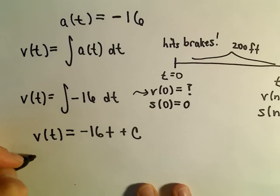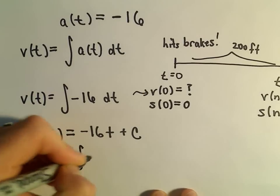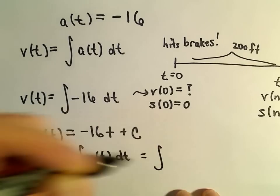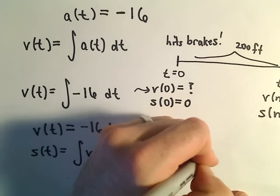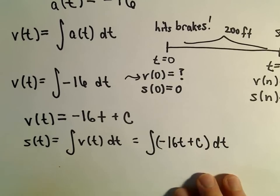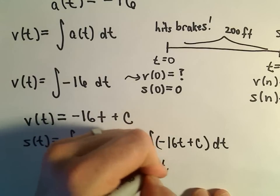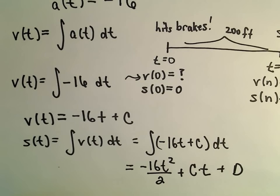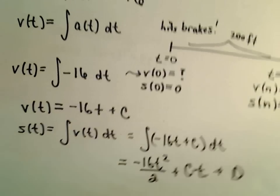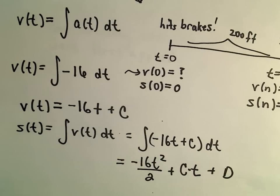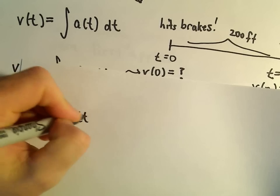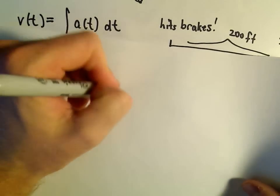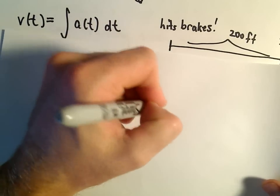I'm going to do one more anti-derivative. Our position function is going to be the anti-derivative of our velocity function, so we calculate the anti-derivative of negative 16t plus c, integrating with respect to t. The anti-derivative gives us negative 16t squared over 2 plus c times t, and then we tack on another arbitrary constant — let's call it d. Simplifying negative 16 over 2 gives us negative 8, so the position function s of t equals negative 8t squared plus ct plus d.